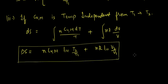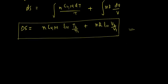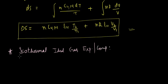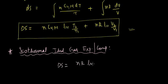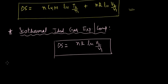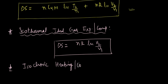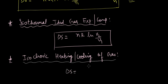For an isothermal ideal gas expansion or compression, T1 equals T2, so ΔS equals nR ln(V2/V1). For an isochoric heating or cooling of gas, V1 equals V2, so ΔS equals nCvm ln(T2/T1).